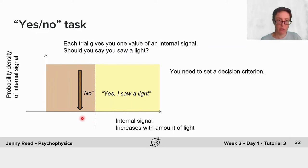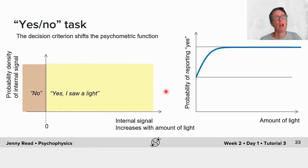Shown here with the dashed line, you might decide, for example, if my noisy internal signal is lower than this value, then I will report no, I didn't see a light. And if it's greater, then I'll say yes, I saw a light.